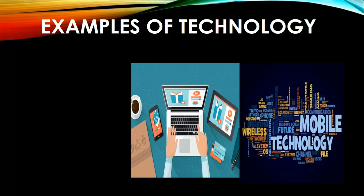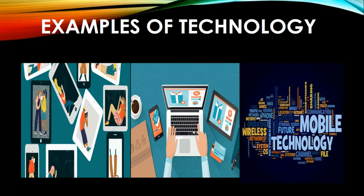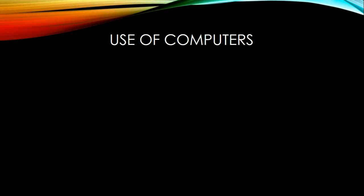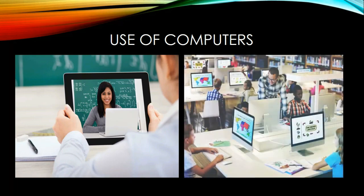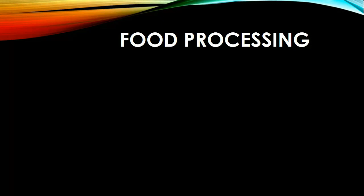Let us proceed to some examples of science applications — the products of technology. First is the use of computers. Computers manipulate information or data; they have the ability to store, retrieve, and process data. We can use a computer to type documents, send email, play games, and browse the web for research. For education, computers are used in online classes, in classrooms, and other innovations in teaching.